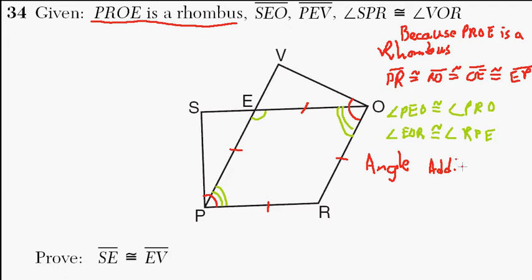I know that angle VOE, this angle VOE is congruent to angle SPE. Because basically VOR, this big angle here, VOR, is equal to the sum of EOR plus VOE.